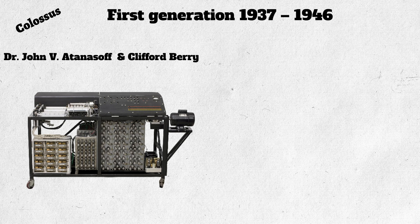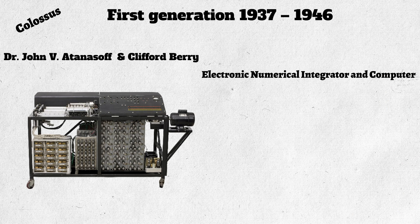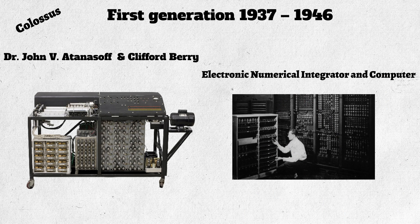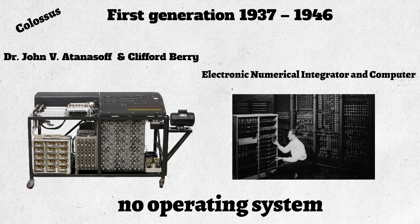Other developments continued until 1946 when the first general-purpose digital computer, the Electronic Numerical Integrator and Computer, ENIAC, was built. It is said that this computer weighed 30 tons and had 18,000 vacuum tubes used for processing. When this computer was turned on for the first time, lights dimmed in sections of Philadelphia. Computers of this generation could only perform single tasks and they had no operating system.